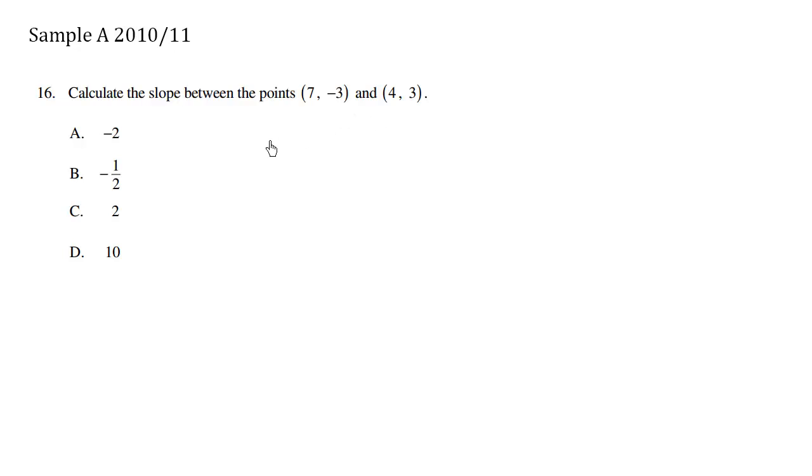When you have two different points, we can use the formula for slope. Slope is equal to y2 minus y1 all over x2 minus x1. This here is x1, this here is y1, this here is x2 and we have y2 as well.